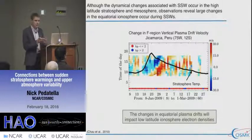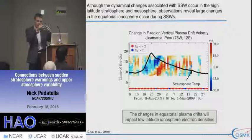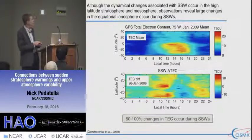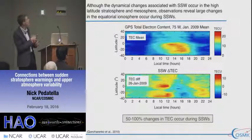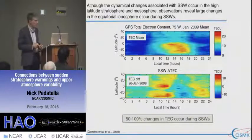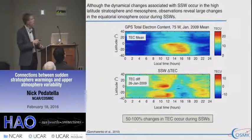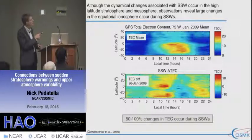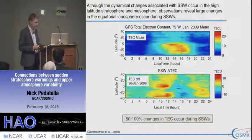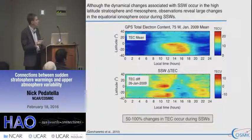These changes in the equatorial vertical drift also impact the ionosphere electron densities by lifting the plasma up, which then diffuses down the geomagnetic field lines and affects the ionospheric anomaly region. We can see this in ground-based GPS total electron content observations — latitude versus local time — showing the mean climatology for January 2009 and the perturbation around the time of the sudden stratosphere warming. Comparing the morning perturbations to the climatological average shows roughly about 100 percent change in TEC, driven by these high-latitude changes in the stratosphere and mesosphere.